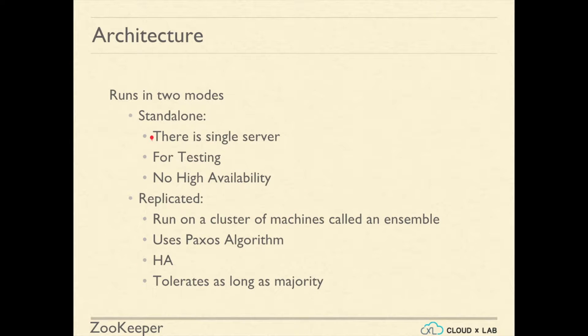Zookeeper can run in two modes: standalone and replicated. In standalone mode, it runs on just one machine. For practical purposes, we do not use standalone mode. It is only for testing purposes, as it does not have high availability.